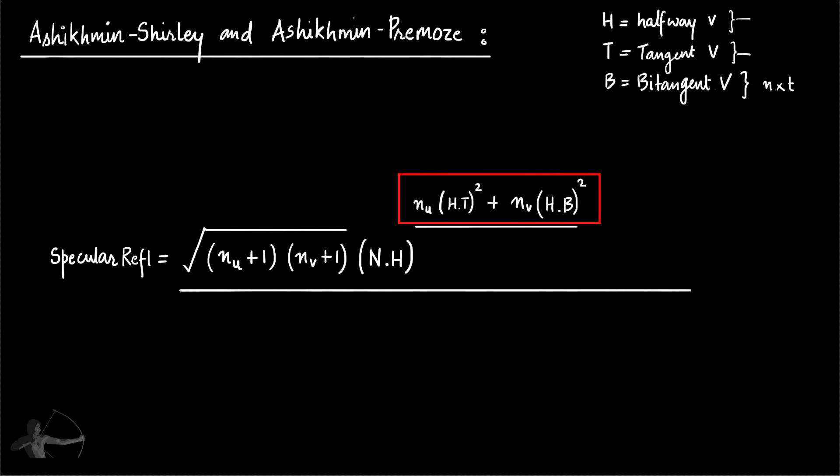So this is the numerator of our power, numerator of exponent. And the denominator is 1 minus n dot h square. So this is the power on top of n dot h.